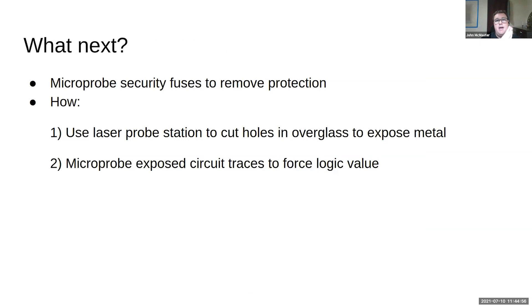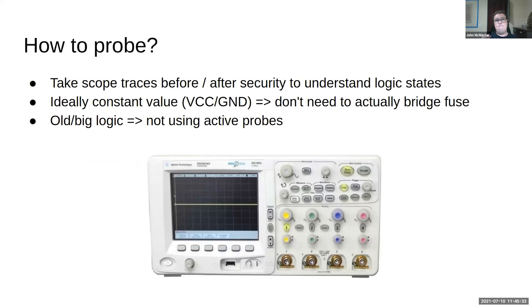Basically the way this works: we first use something called a laser probe station, which has a very high power laser. It shoots a massive laser blast at the chip, imparting so much energy that it blows off some of the protective glass on top of the chip and exposes the metal below. If you provide just the right amount of energy, it'll blow out the glass without destroying the chip below. It's a very fine hammer — you have to get some practice — but once you've got holes in the top, you can take tiny needles in there and force the values to de-protect it.